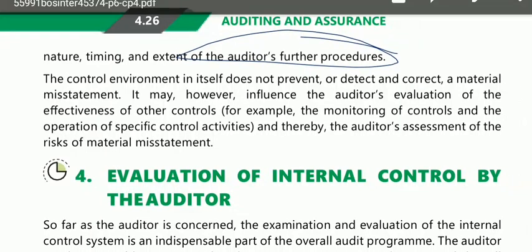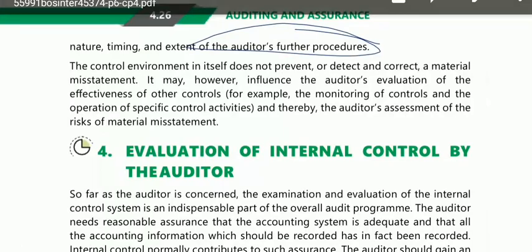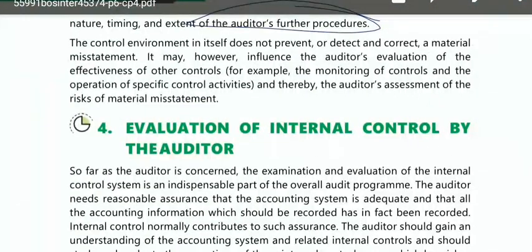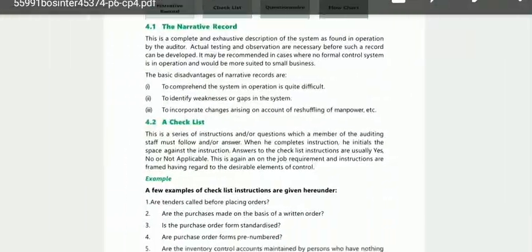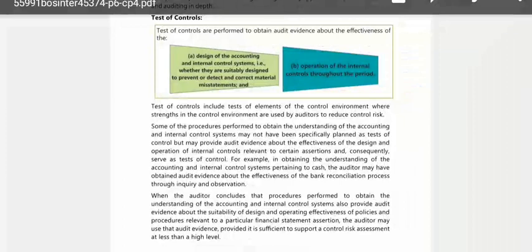The control environment in itself does not prevent, detect or correct a material misstatement; however, it may influence the auditor's evaluation of the effectiveness of other controls and the auditor's assessment of the risk of material misstatement — for example, in relation to monitoring of controls and the operation of specific control activities. It can only influence, not prevent or correct misstatements on its own. With that, topic number 3 is finally over, and in the next video we will start topic number 4. The English explanation now starts for South Indian students.